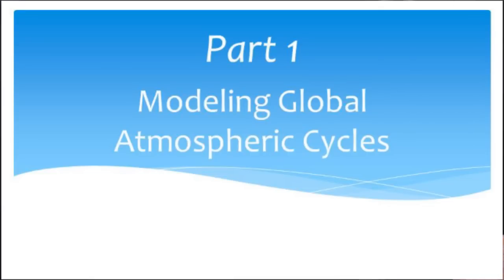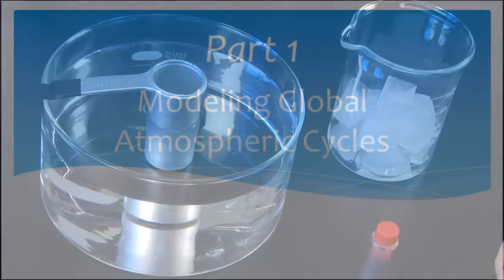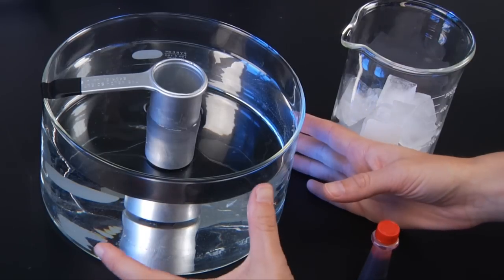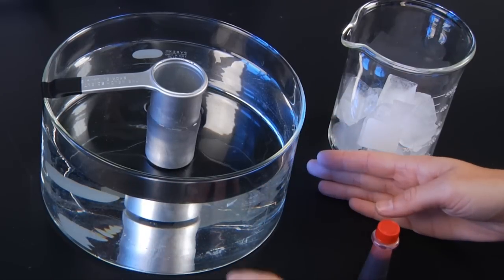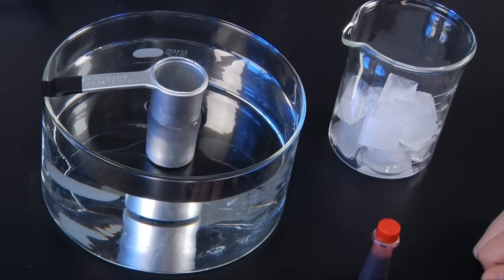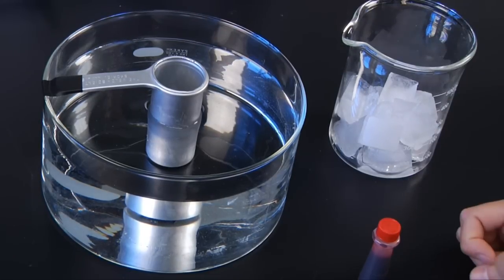For this portion of your lab, you're going to be modeling global atmospheric cycles using this setup. You're going to have a round glass dish that's filled with water, and then a little metal cup that's taped to the bottom of your dish so it doesn't move around too much.